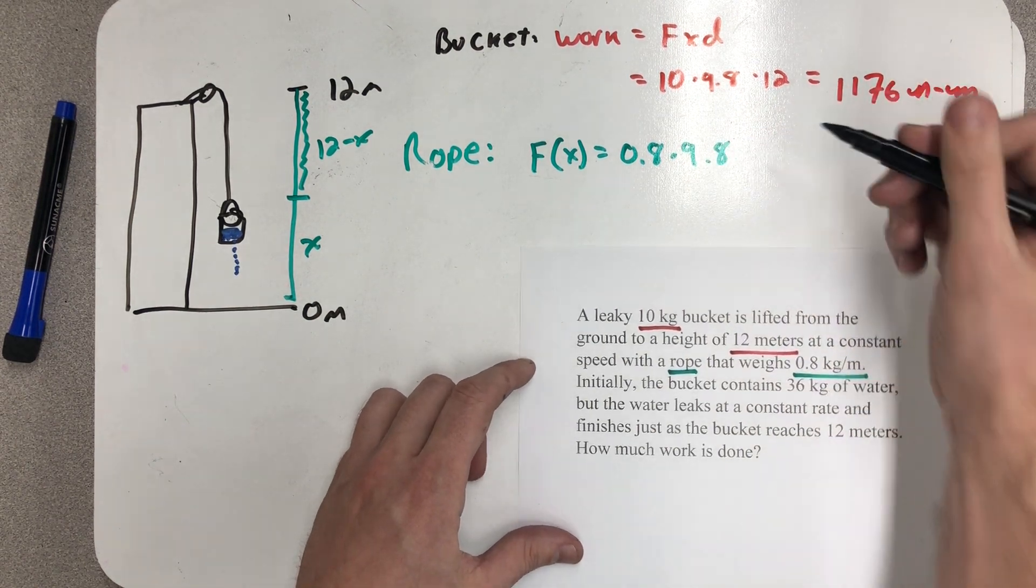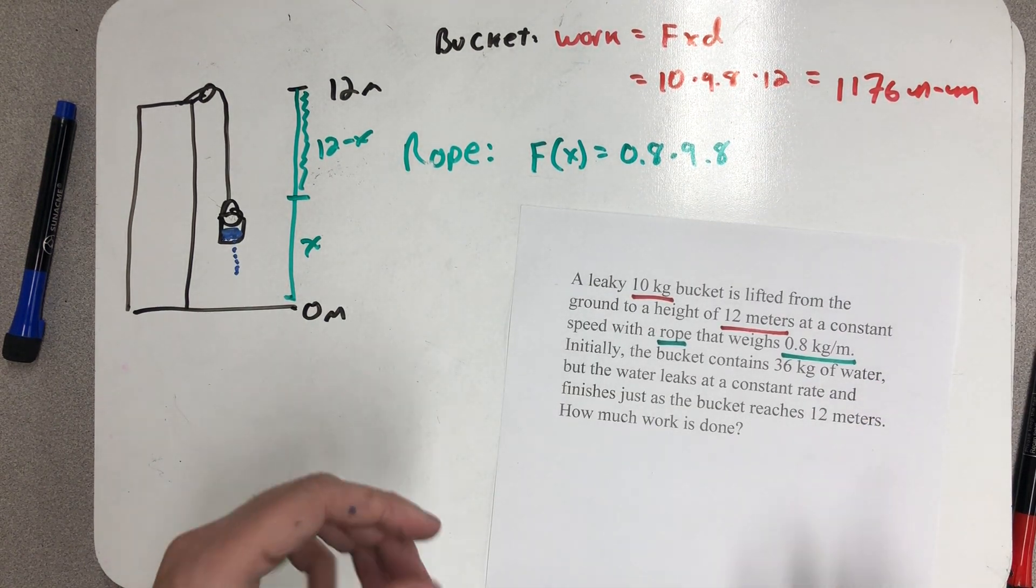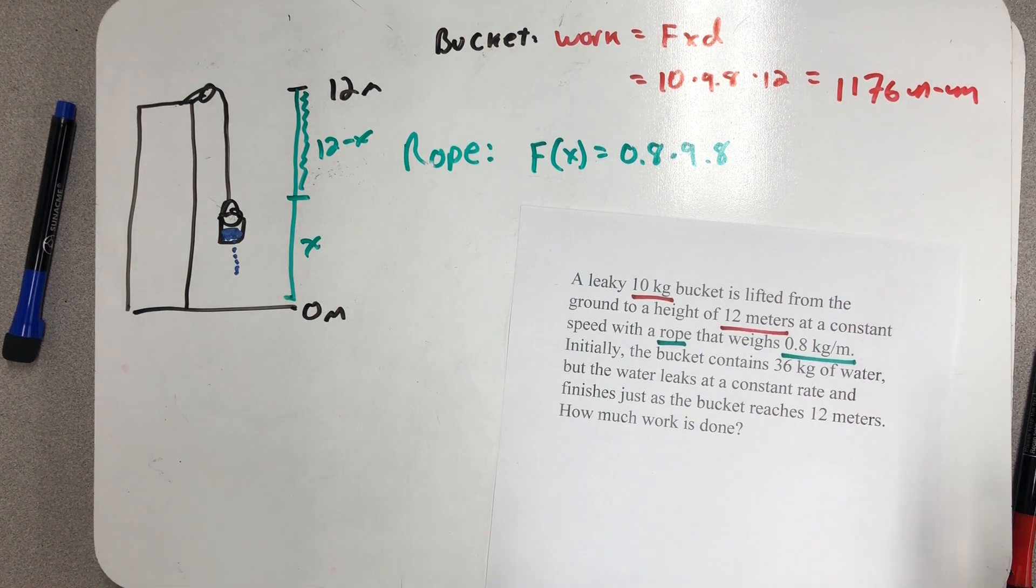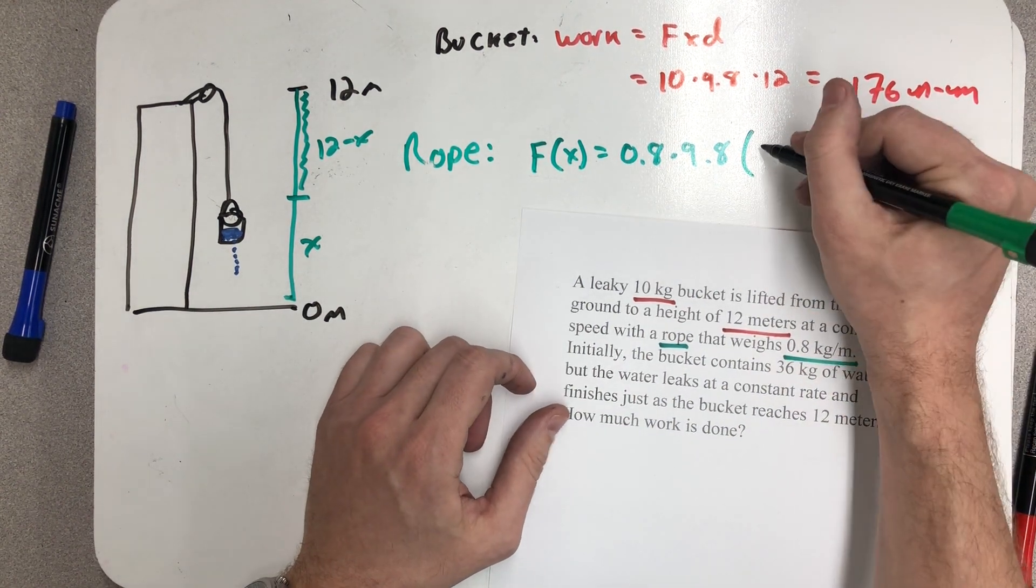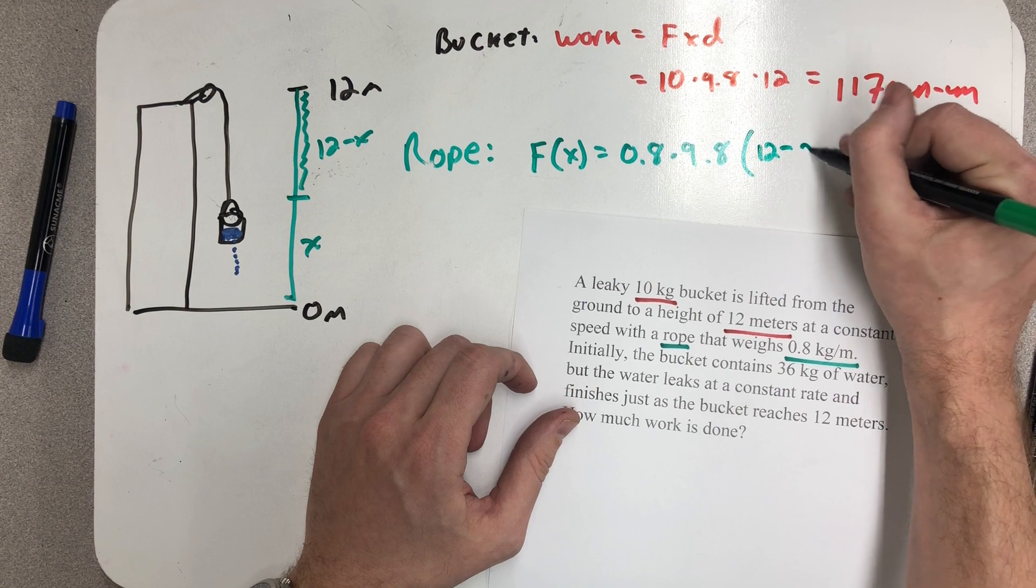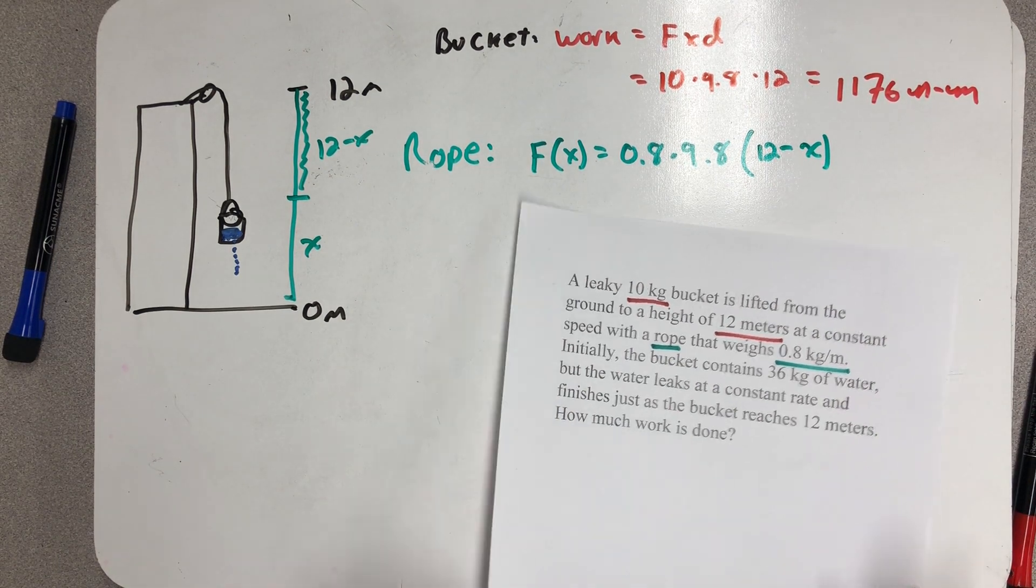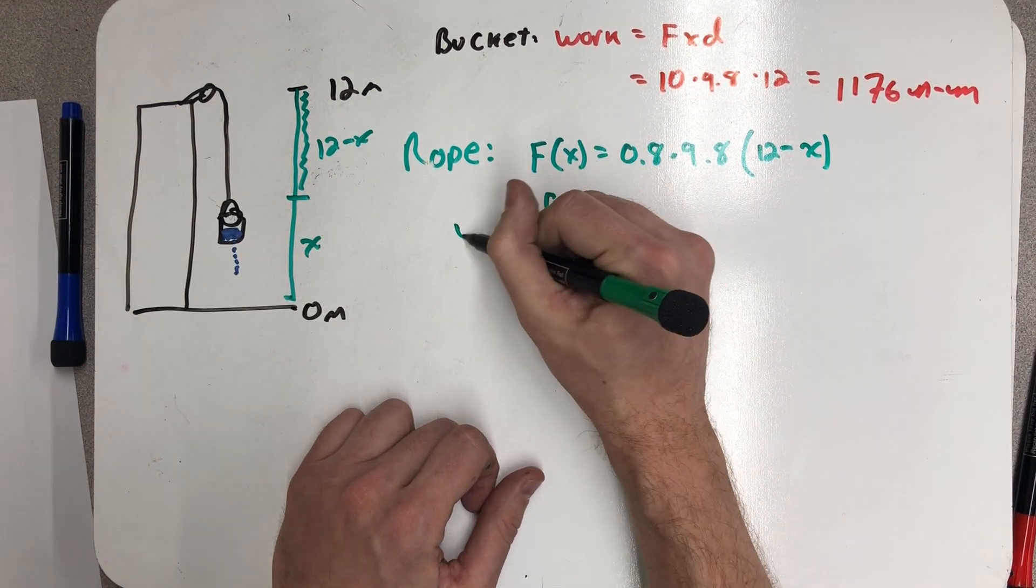The rope weighs 0.8 kilograms per meter times 9.8 meters per second per second to turn that into newtons per meter, and then finally times the length of rope. I can integrate this force function to find the work done.